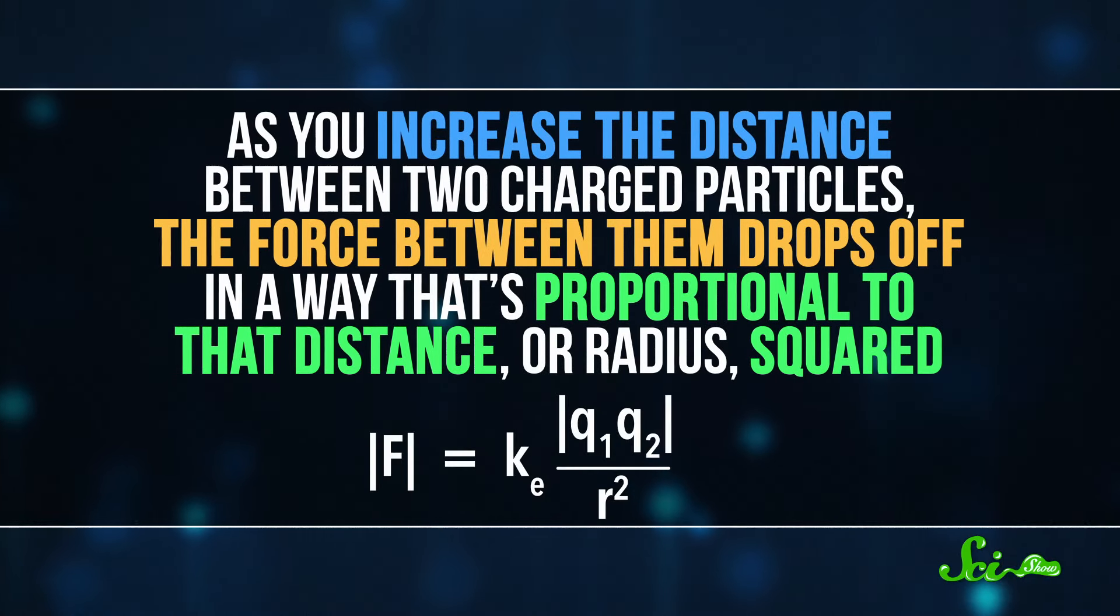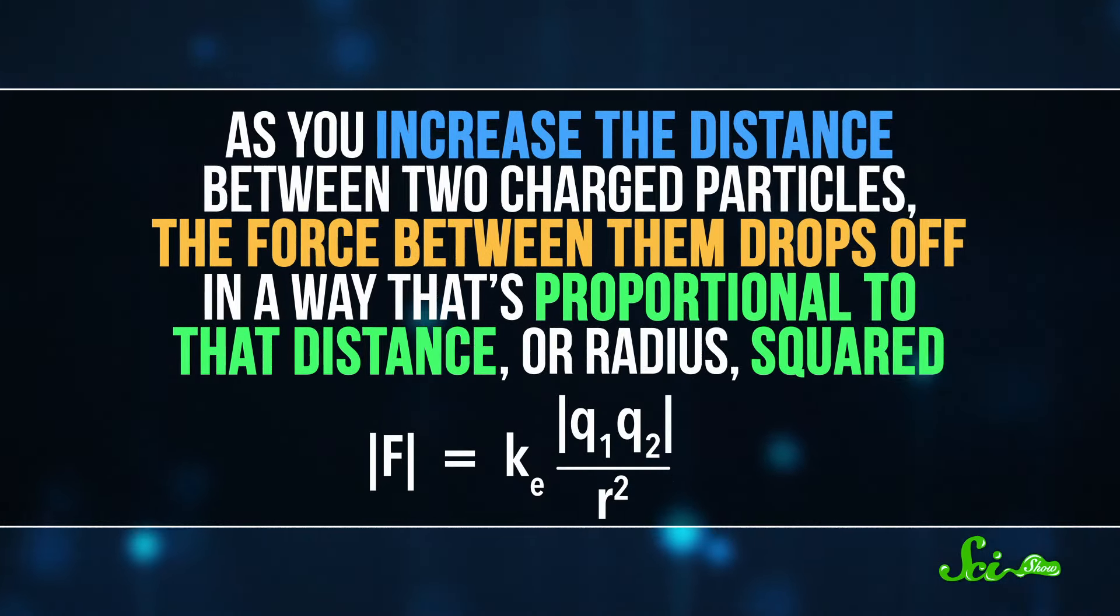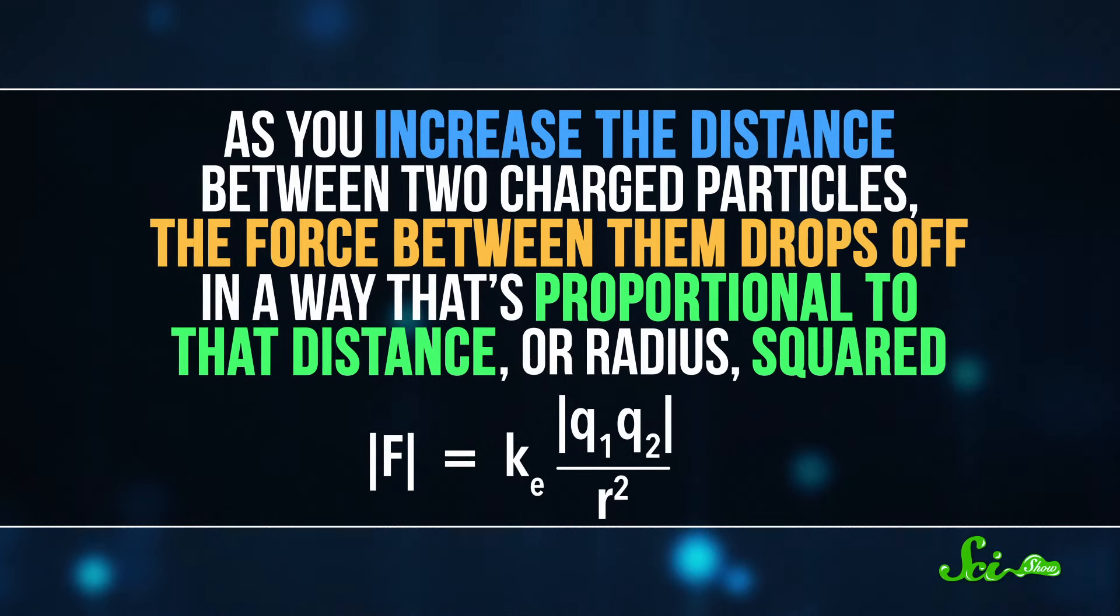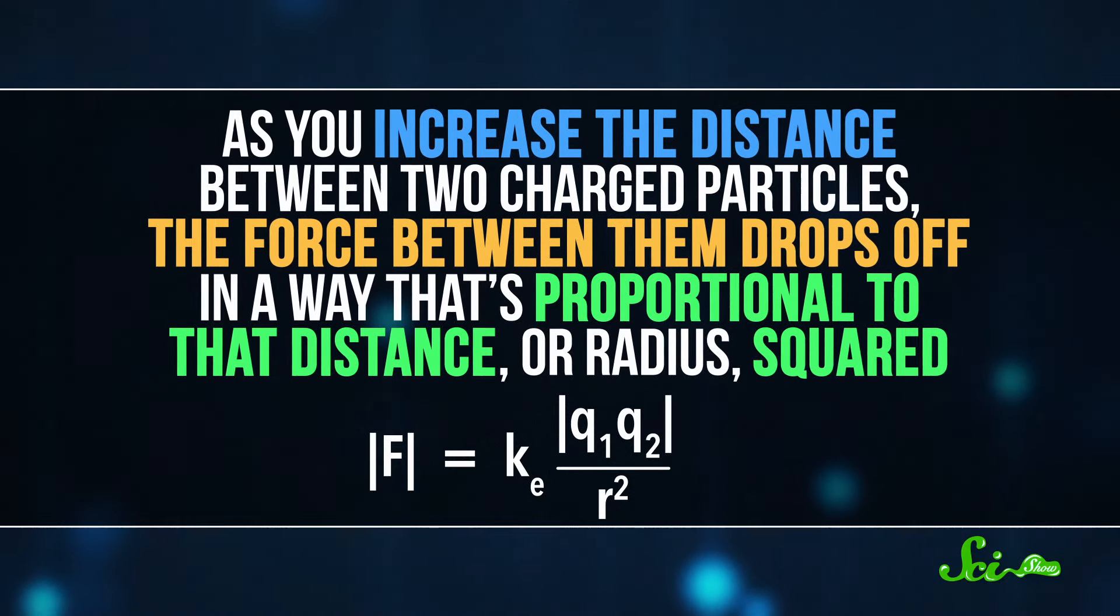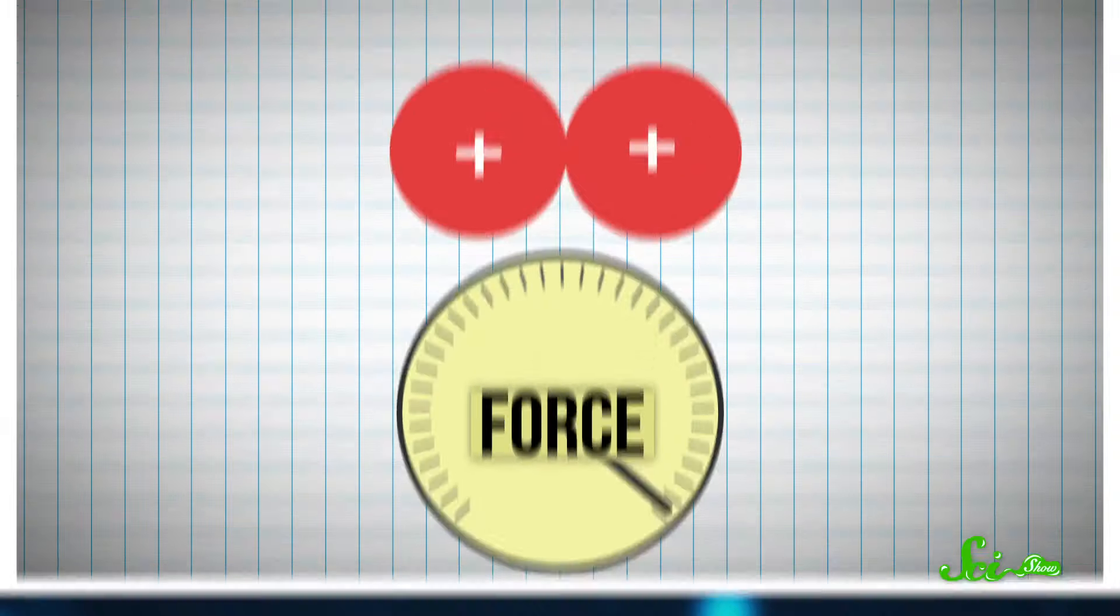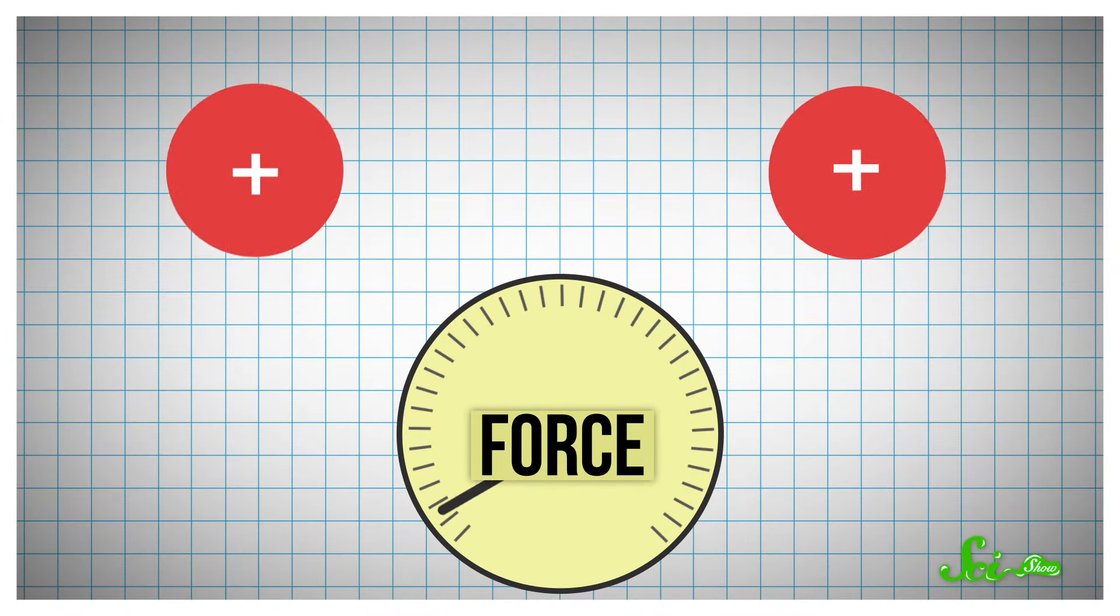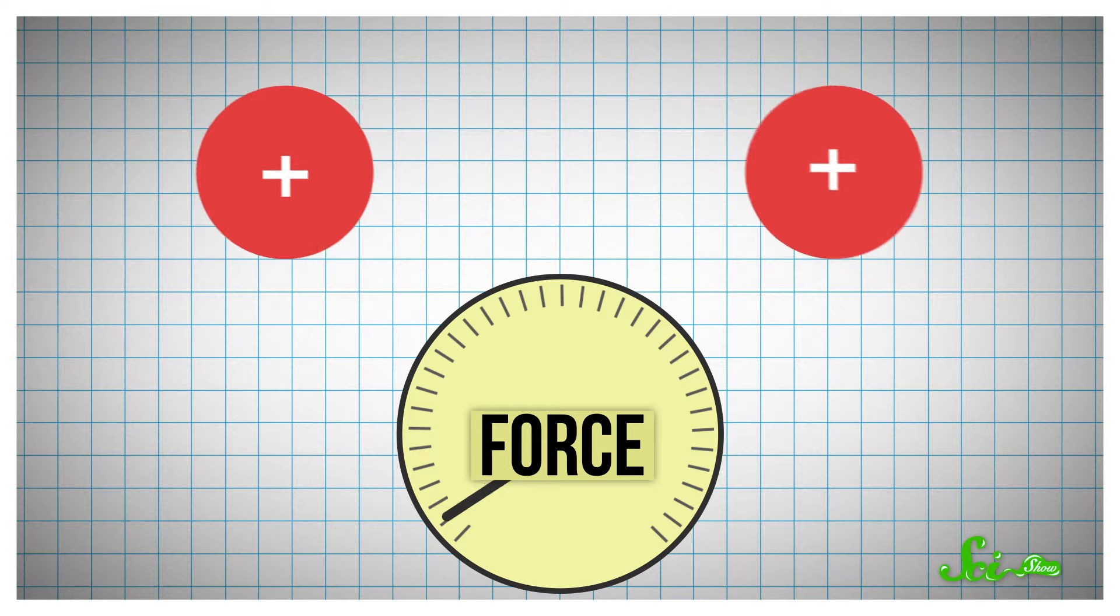It says that as you increase the distance between two charged particles, the force between them drops off in a way that's proportional to that distance, or radius squared. Which basically means that as the particles move farther apart, the force between them gets smaller fast. And generations of physicists have used and tested this formula, and it's never failed them.